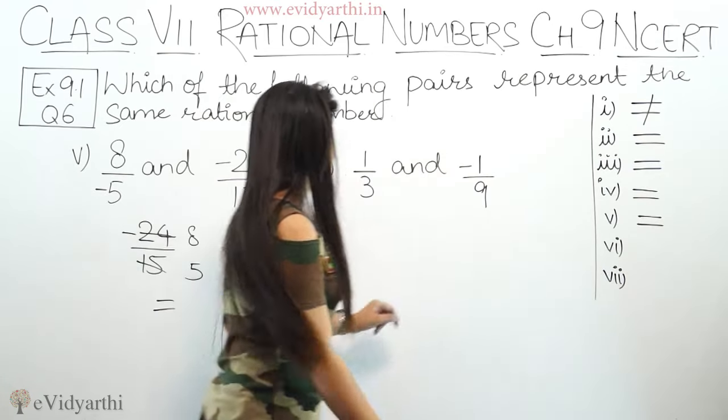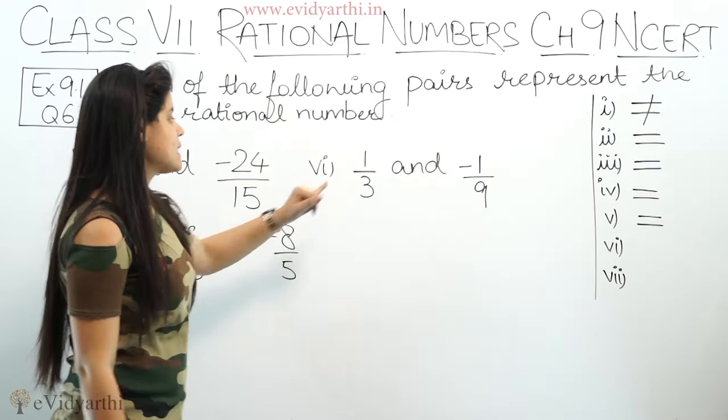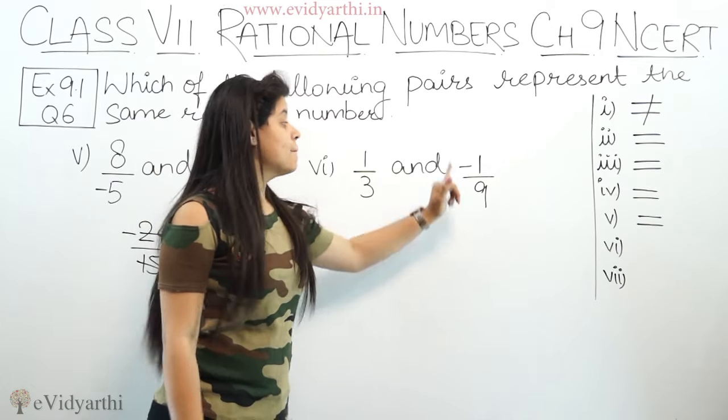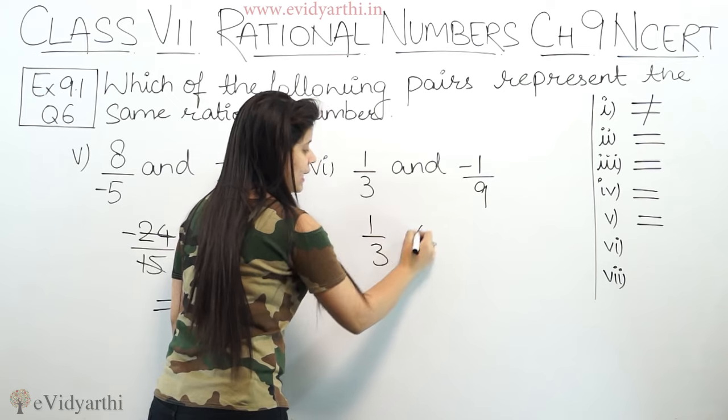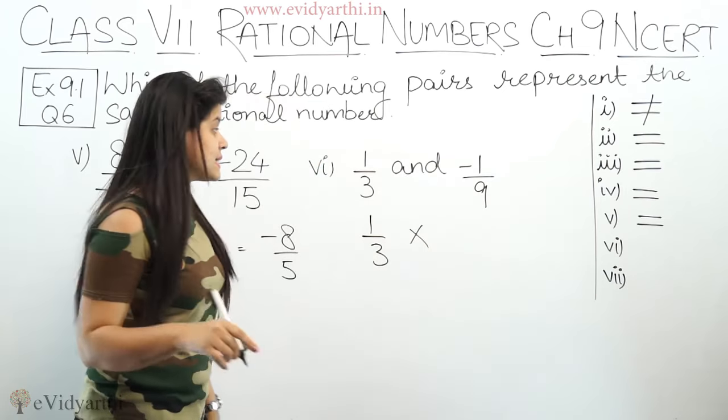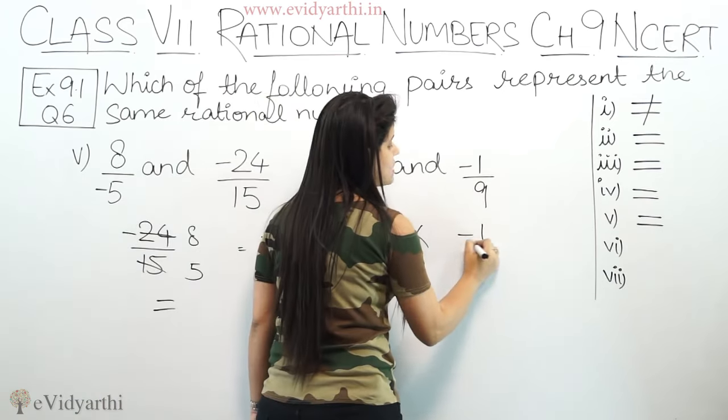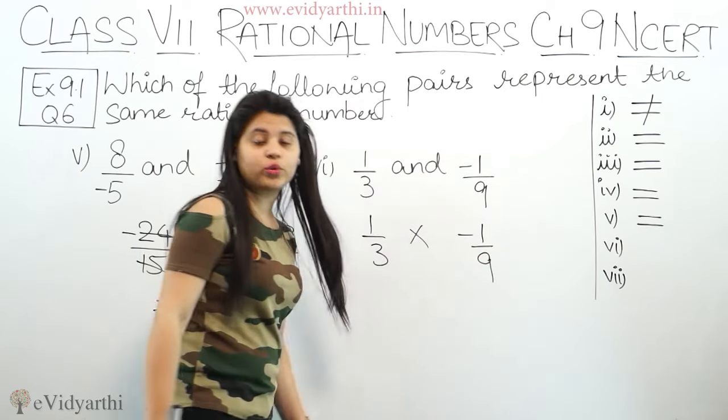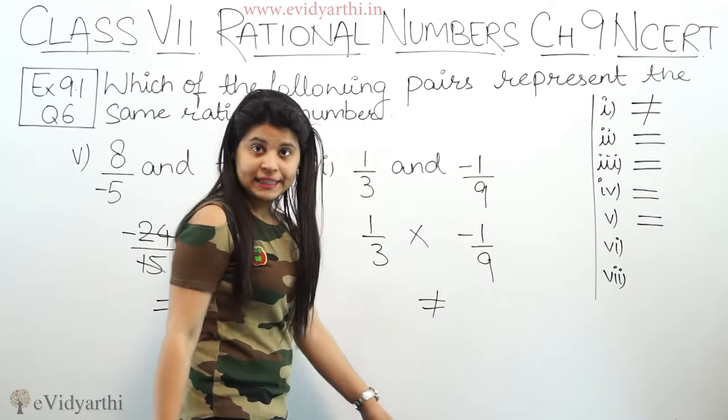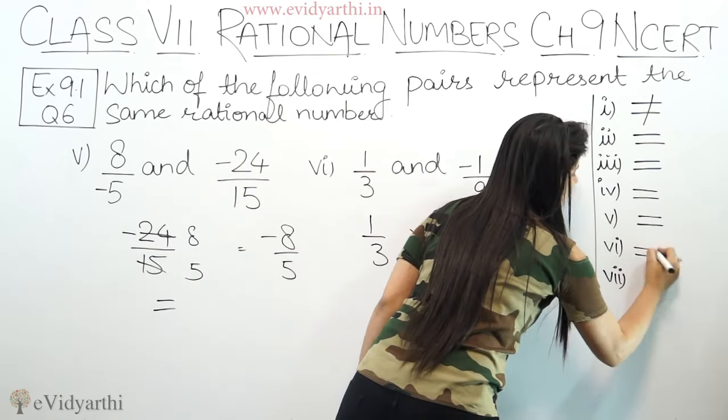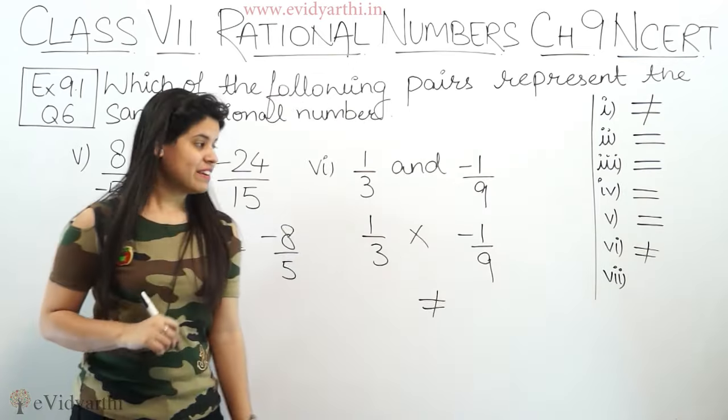Coming to sixth part, it says 1 upon 3 and minus 1 upon 9. 1 upon 3 cannot be converted to lowest form further. Similarly, minus 1 upon 9 also cannot be converted to lowest form. So this means they are not equal, they are not the same rational numbers.